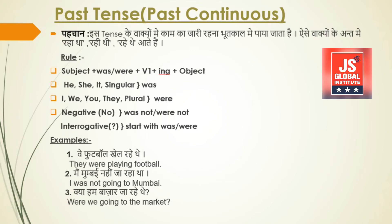Now we move to interrogative sentences. In interrogative sentences, we start directly with 'was' or 'were' — the auxiliary verb comes before the subject, and a question mark is added at the end. The third example is: 'क्या हम बाजार जा रहे थे?' (Were we going to the market?) The word 'रहे थे' tells us it is past continuous. 'जाना' means 'go', the subject 'हम' means 'we', and the object is 'to the market'. Since it is a question, 'were' moves before 'we'. The full sentence is: 'Were we going to the market?'